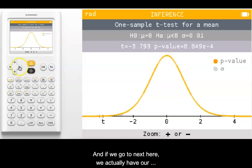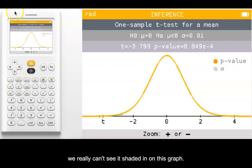If we go to next here, we actually have our t-distribution drawn for us, and we can see the alpha level shaded in here. Our p-value is so small that we really can't see it shaded in on this graph.